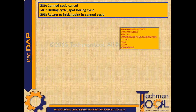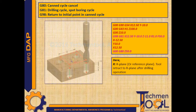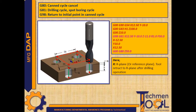G81 is used for drilling cycle or spot boring cycle. G80 is used for cancelling the canned cycle. G98 is used for return to initial point in canned cycle. In this sample program, after the rapid movements to the instructed positions, the drilling cycle starts along with the position X12.5 Y-10 Z-11 at the feed rate of 50 microns. Here R is the R plane or reference plane; the tool retracts to the R plane after the drilling operation.